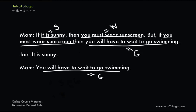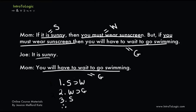We can use those three symbolic letters to represent the argument symbolically. Premise one would be: if S then W — this is what we call a conditional, or if-then sentence. The next premise is: if W then G. Premise three, from Joe, is: S. And then our conclusion — represented with three dots meaning 'therefore' — is: therefore G, you will have to wait to go swimming. While I'm not going to get into the rules for how we derive conclusion G, this at least gives you a feel for what an argument will look like once we break our assertions down into various symbolic letters.